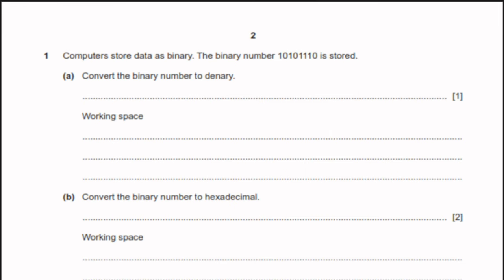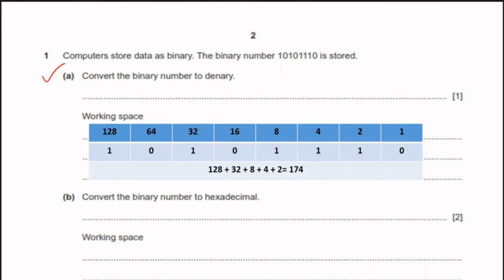Question number one: computers store data as binary. The binary number 10101110 is stored. Part A is to convert the binary number to denary. We need the powers of 2, write the number, add them up and we get the answer 174. The answer will be 174.